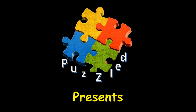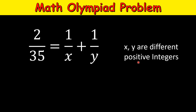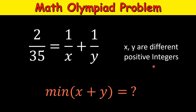Hello friends, we are back with a new maths olympiad problem. Today's problem is this equation: 2 divided by 35 equals 1 divided by x plus 1 divided by y, where x and y are different positive integers — they are not equal to each other and they are positive integers. Your goal is to find the minimum of x plus y.